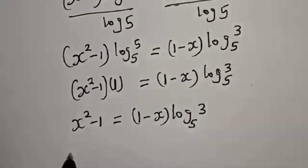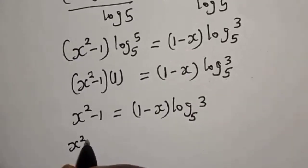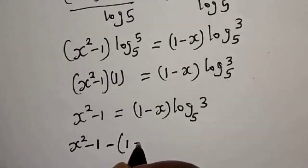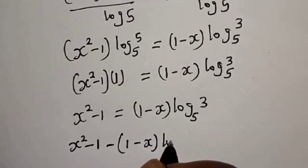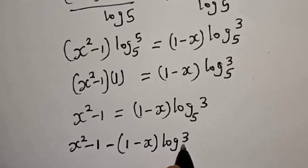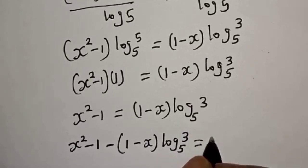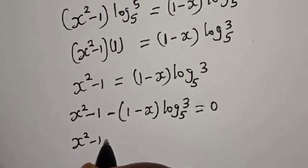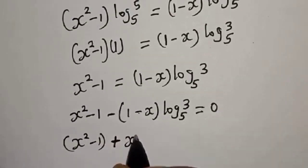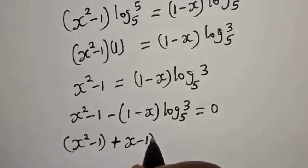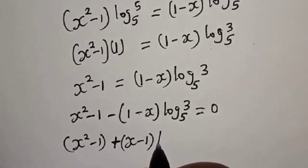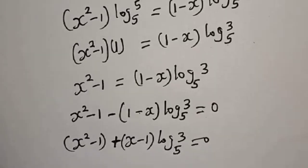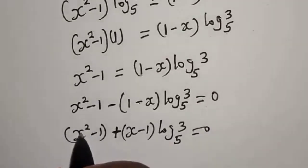Now let's bring all terms to one side: s squared minus 1 minus (1 minus s) log base 5 of 3 is equal to 0. This gives us s squared minus 1 minus (1 minus s) log base 5 of 3 equals 0.